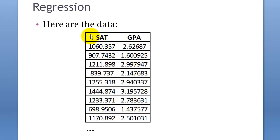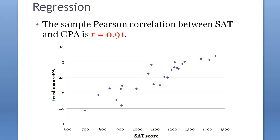Here are the data — SAT scores and GPAs after finishing one year. The scatterplot looks like this. When we ran Pearson correlation between SAT and GPA, it was 0.91, really high. We can say that's correlation, but we also have to make sure that it's not due to sampling error, and we do that with the critical value.